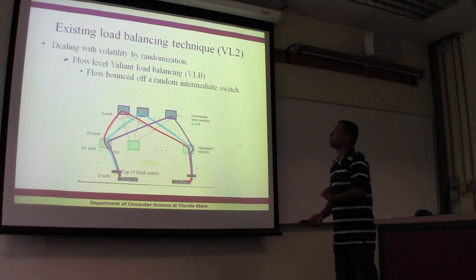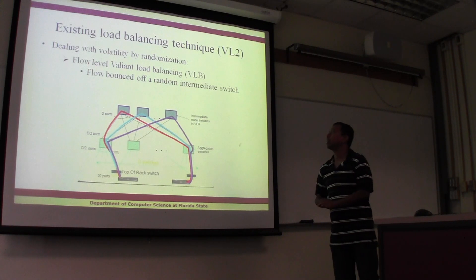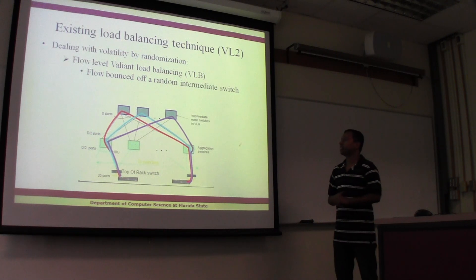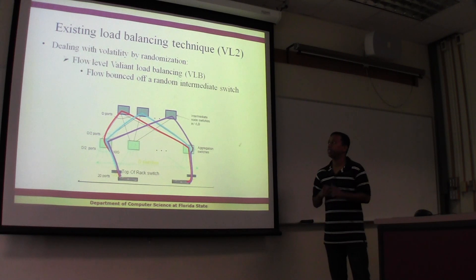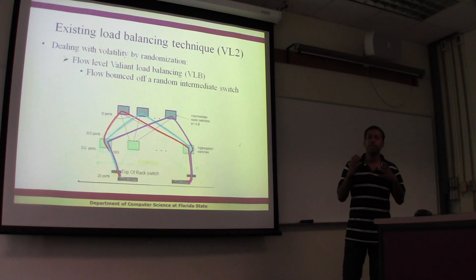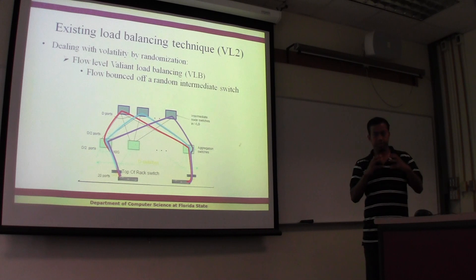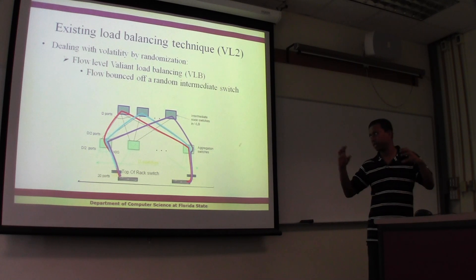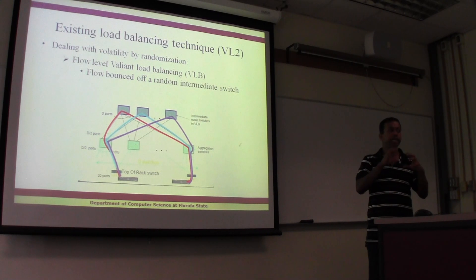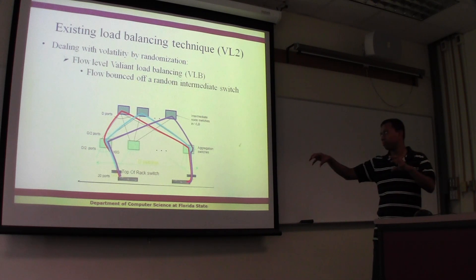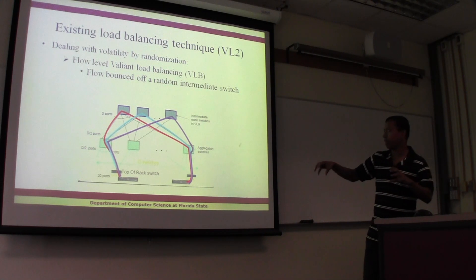The existing technique is called VLB — Valiant Load Balancing. What it does is, if it has to send a message from node X to node Y, it randomly selects any other node Z, and then routes it through Z before sending it back to node Y.